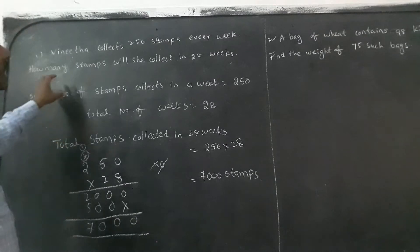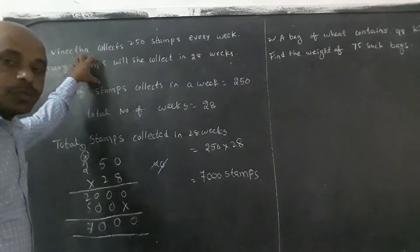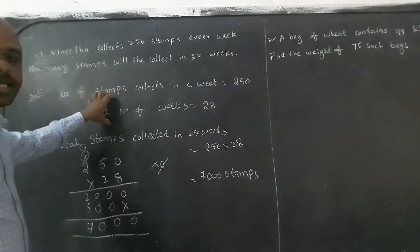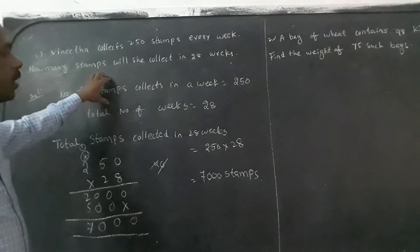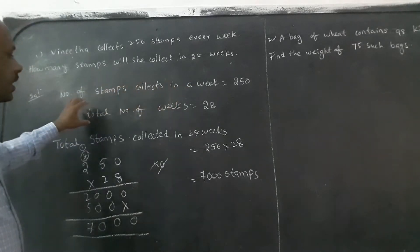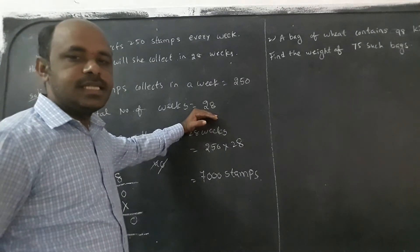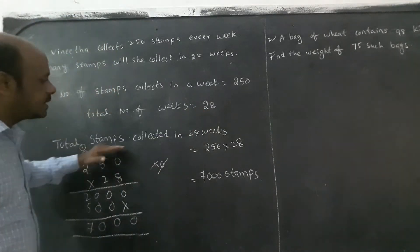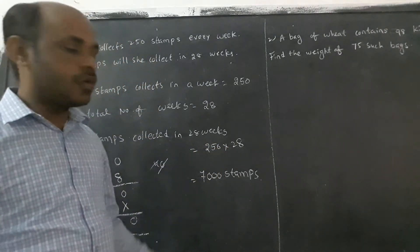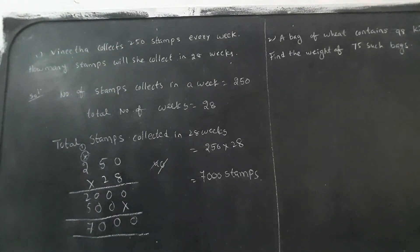One more time: in the question, what is given we have to understand properly. After understanding, divide it into statements — what is given, what is asked. He gave number of stamps in a week: 250. What is he asking? 28 weeks, how many stamps collected. So we wrote total stamps: 250 into 28, we got 7000 stamps.